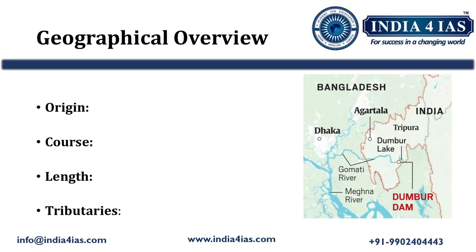Now we will briefly study the geographical overview of the Gumti River. Coming to its origin, the river originates from the hills of Dumur, located in the north-eastern part of Tripura near the Indo-Bangladesh border. It then moves through India, enters Bangladesh, and joins the Meghna River as a tributary.